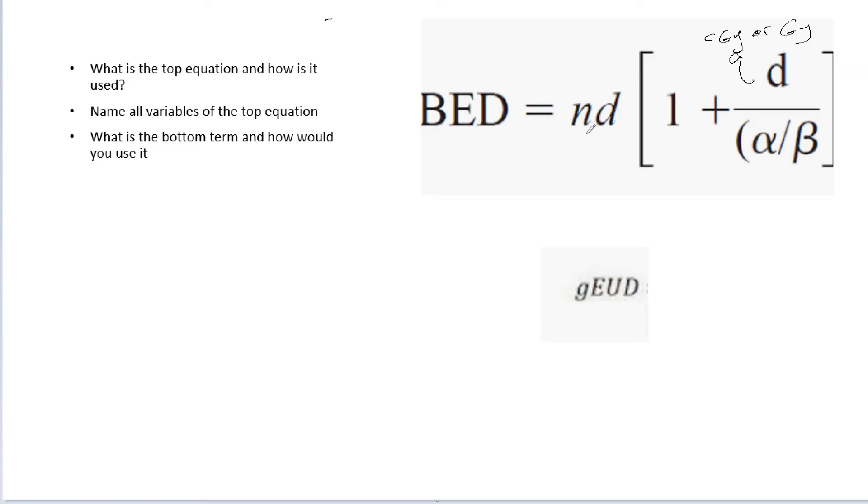Also N, this is the number of fractions that are delivered. And then this is the alpha beta ratio of what we are considering in question. So for example, this may very well vary whether you're considering the PTV, the type of tumor, a lung, whatever it may be, that is what this alpha beta ratio is going to be. And so those are all the variables and how you would use it clinically.